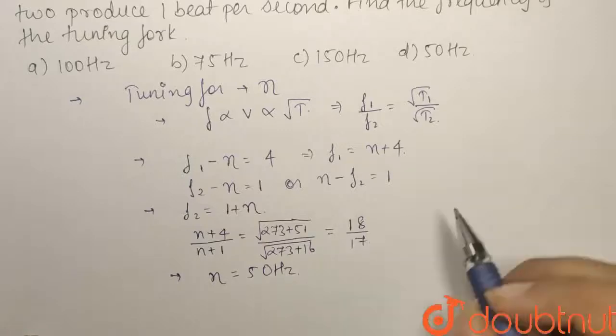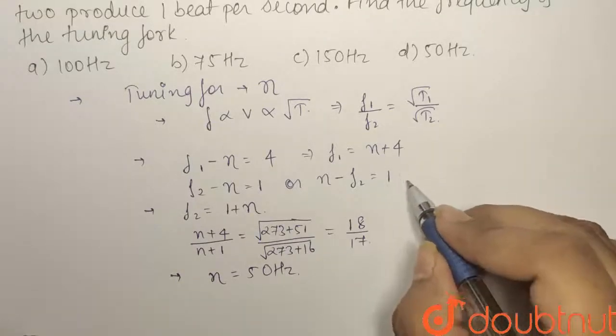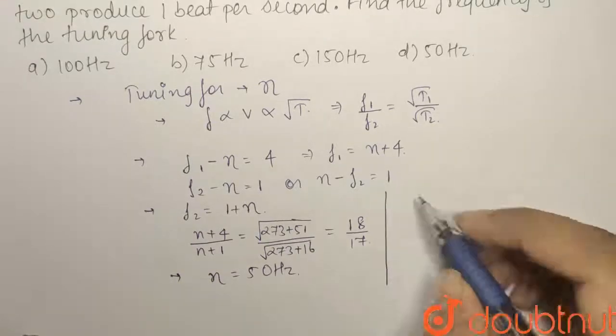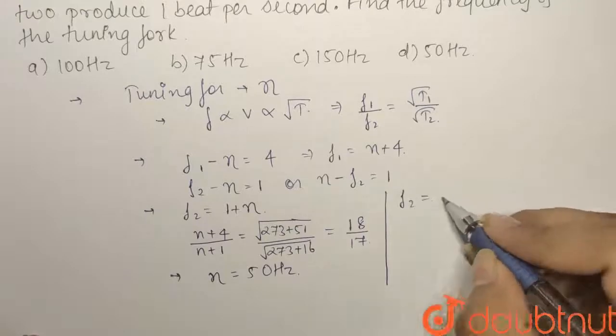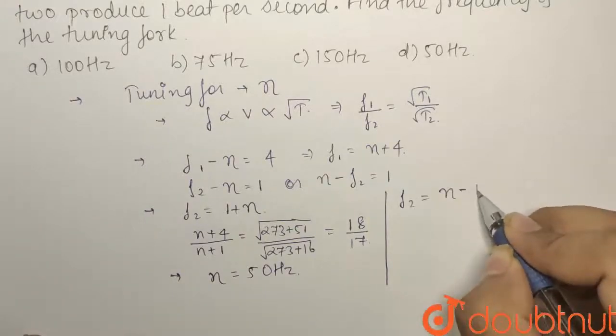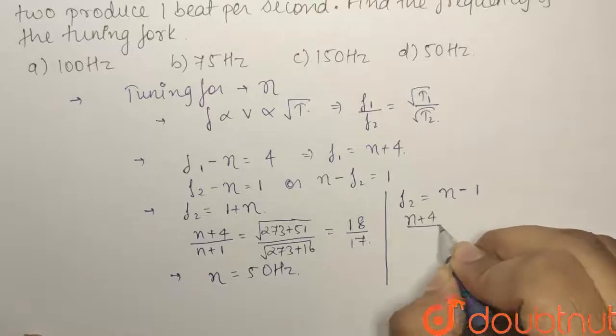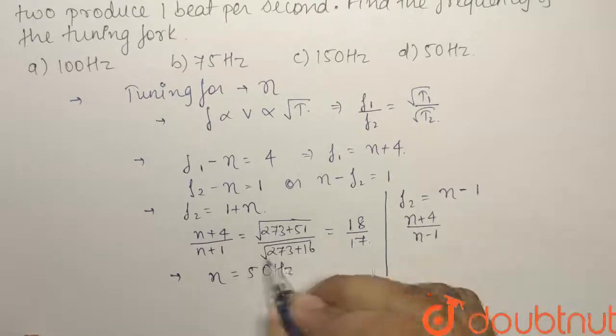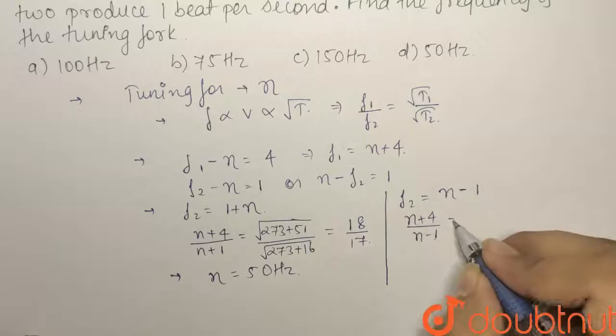We have found out for the first case. Now simultaneously let us find out for the second case, that is F2 equals to eta minus 1. In this case it will be eta plus 4 divided by eta minus 1. The temperature is same, so it will become 18 by 17 only.